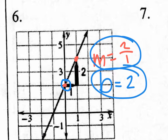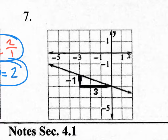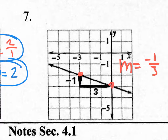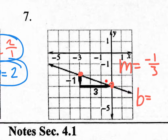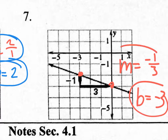So our slope is 2 over 1 and our y-intercept, which we'll call B from now on, is 2. For number 7, the slope is down 1 over 3 — from this point to this point you go down 1 and over 3. The B value representing the y-intercept: where does this line cross the y-axis? Right here — that's negative 1, 2, 3 — so the B value is negative 3.